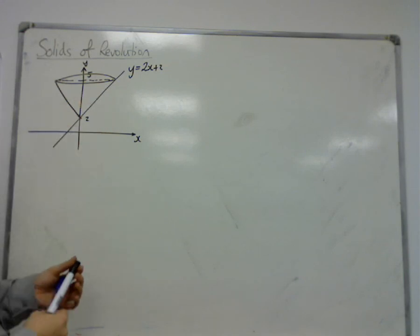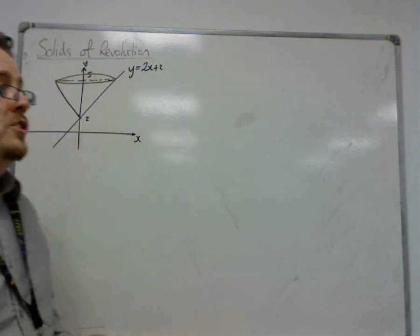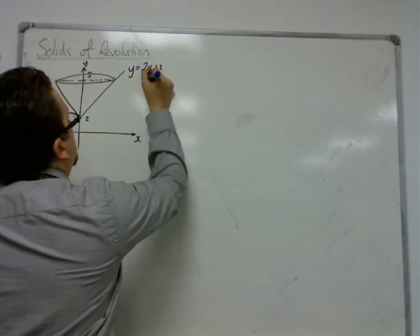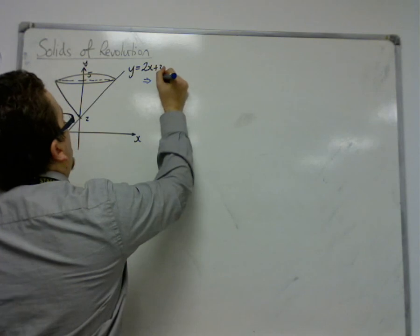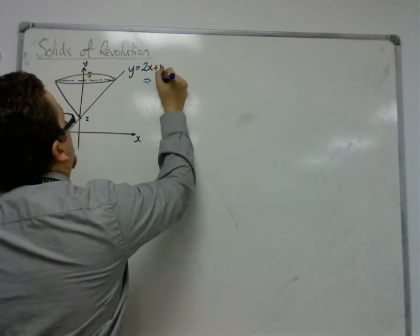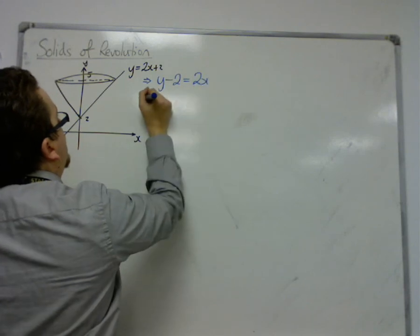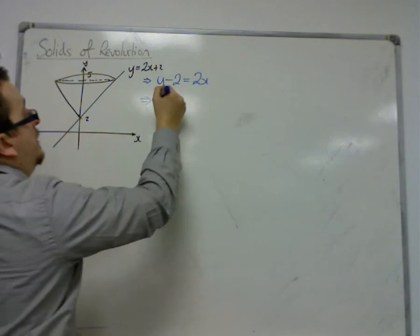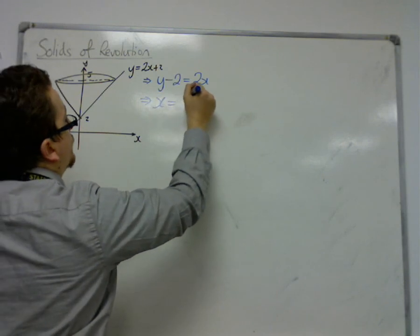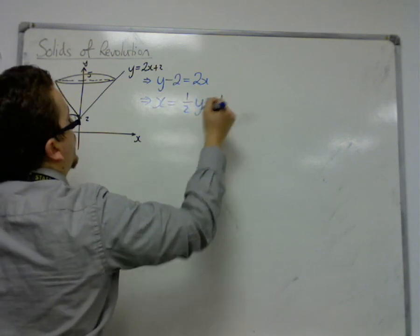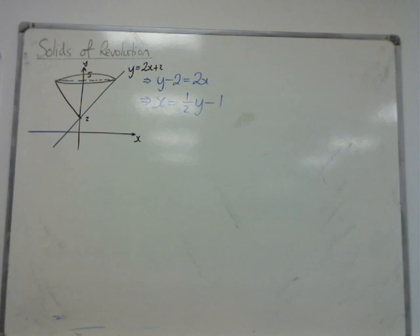So one thing that you will most regularly have to do in these types of problems is to make sure that you have x equals. So you need to rearrange the equation that you have, if it's not already in a nice format, to get x equals. So in this case, x is equal to 1 half y minus 1.